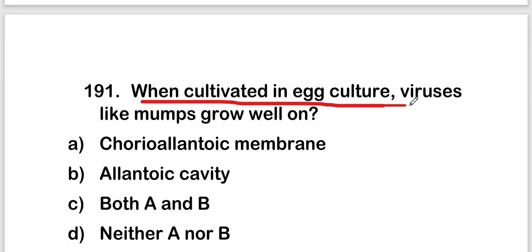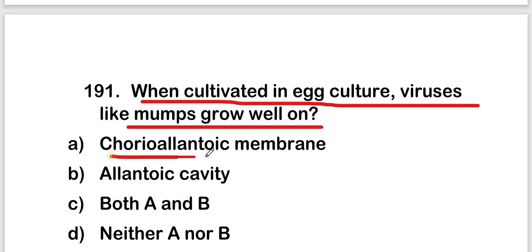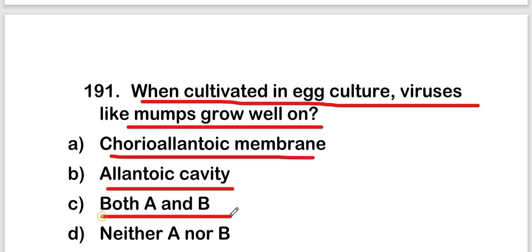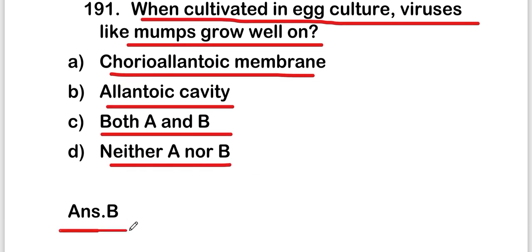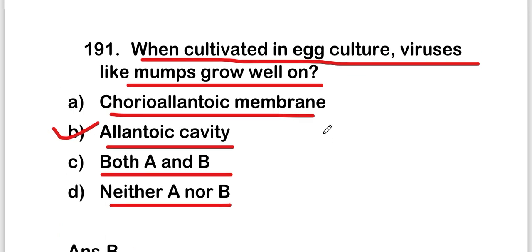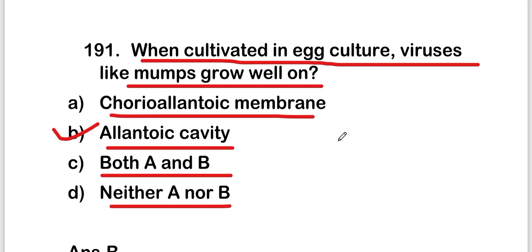The next question: when cultivated in egg culture, viruses like mumps grow well on — chorio-allantoic membrane, allantoic cavity, both A and B, or neither A nor B. The right answer is option B — allantoic cavity. Viruses like mumps grow well on the allantoic cavity.